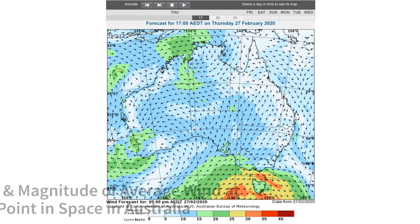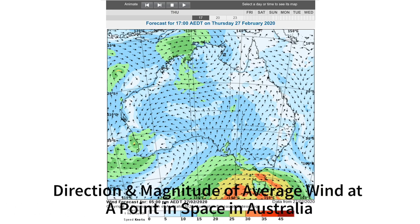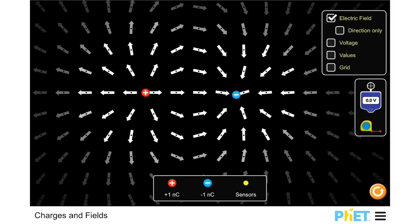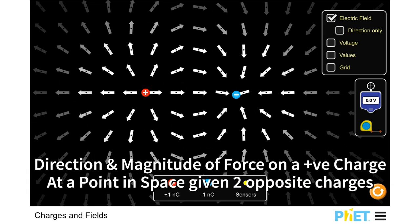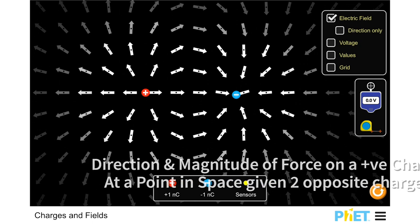Now, here is a diagram of the direction and magnitude of the average wind at any point in Australia. You can see different directions and higher magnitudes down near Tasmania. Here we've got a field diagram of the direction and magnitude of force on a positive charge at any point in space. So, there's some examples.